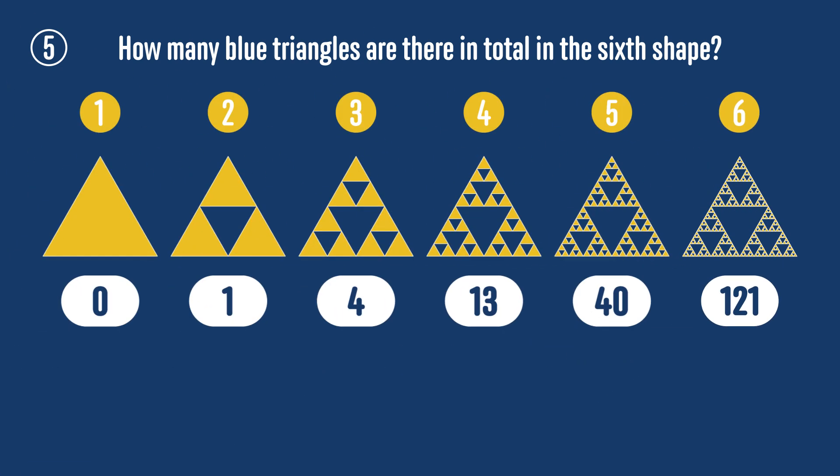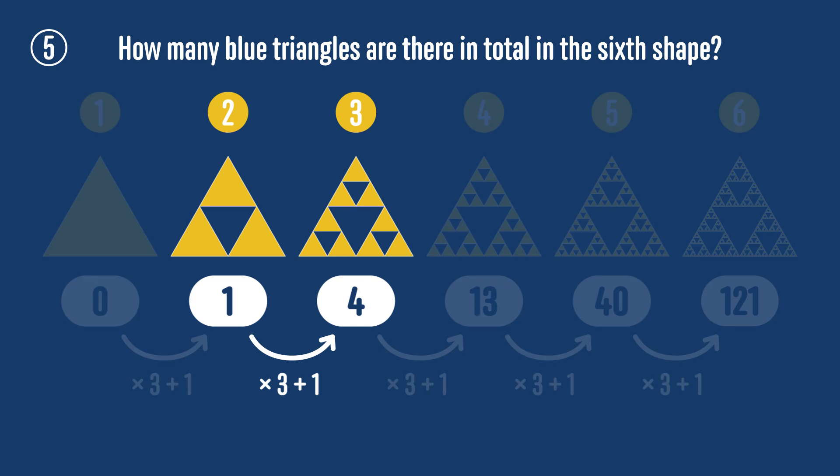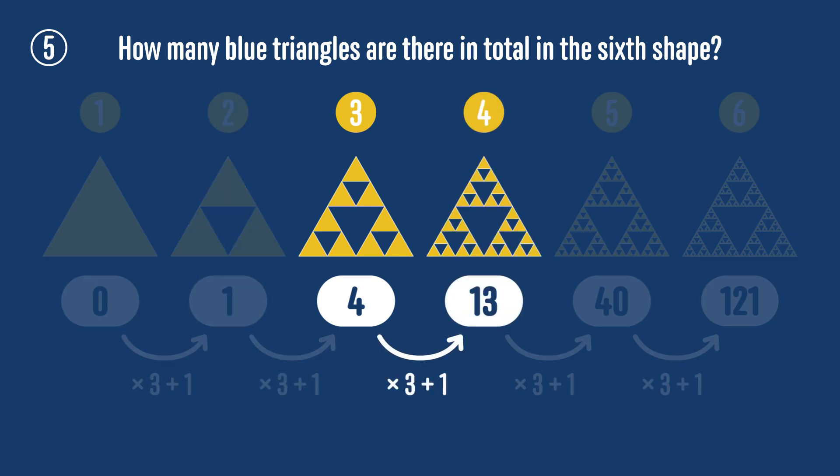Alternatively, you could notice that the number of blue triangles forms a sequence, where to go from one time to the next, you multiply by 3 and add 1. So 1 times 3 plus 1 is 4, 4 times 3 plus 1 is 13, and so on.